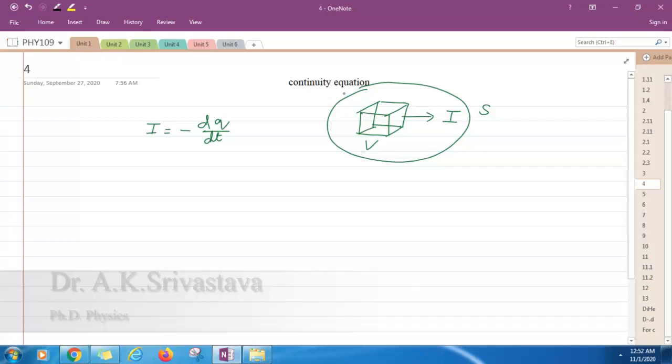First part is continuity equation. This equation says that total current flowing out of some volume, let's suppose it is I, must be equal to the rate of decrease of charge within that volume.